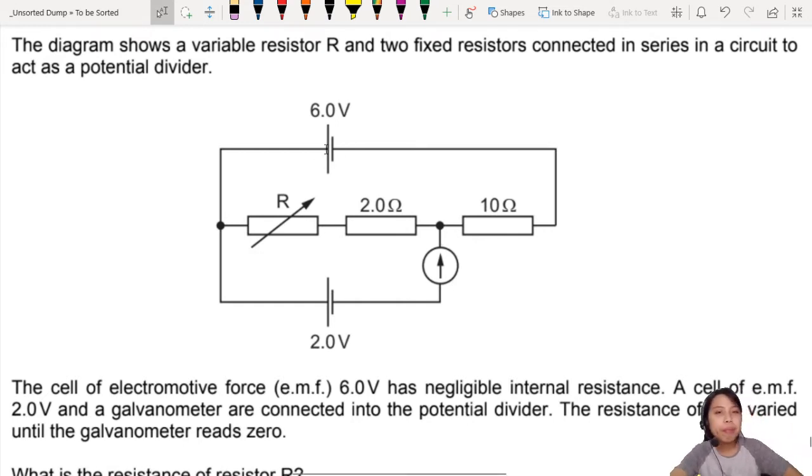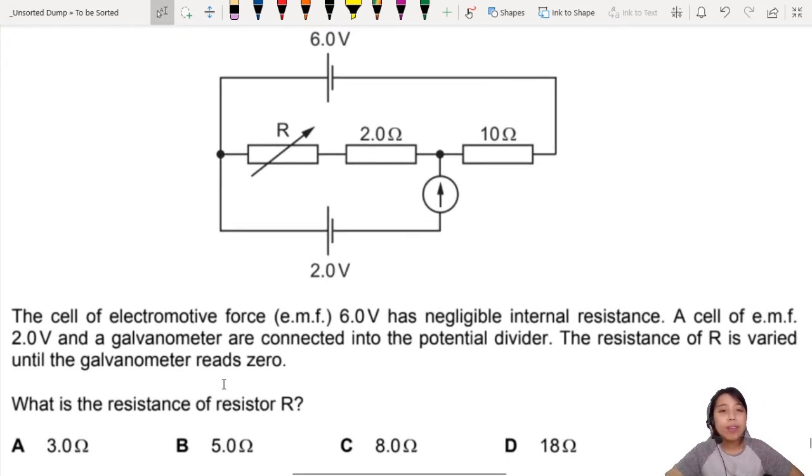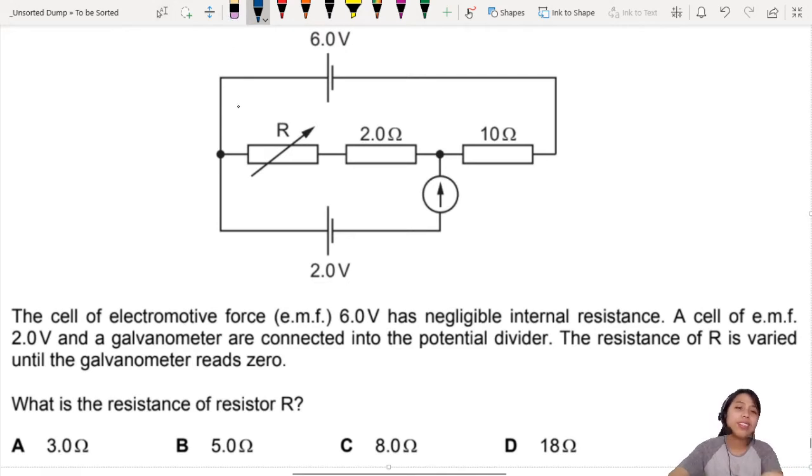So we're going to stay calm and see what are we trying to find. So we have two cells, six volts, two volts. The resistance here is adjusted until the reading is zero. So reading zero means no current in that direction. What is the resistance of resistor R?